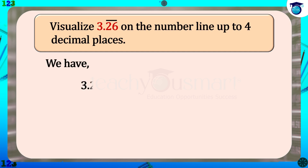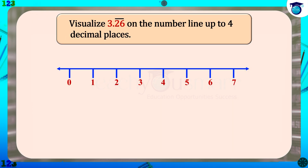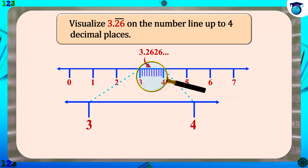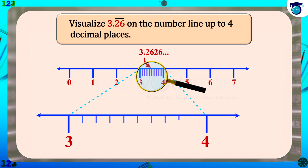We have 3.26 bar equals 3.2626, etc. This number lies between 3 and 4. So divide the distance between 3 and 4 into 10 equal parts, and each part represents 3.1, 3.2, etc. to 3.9.